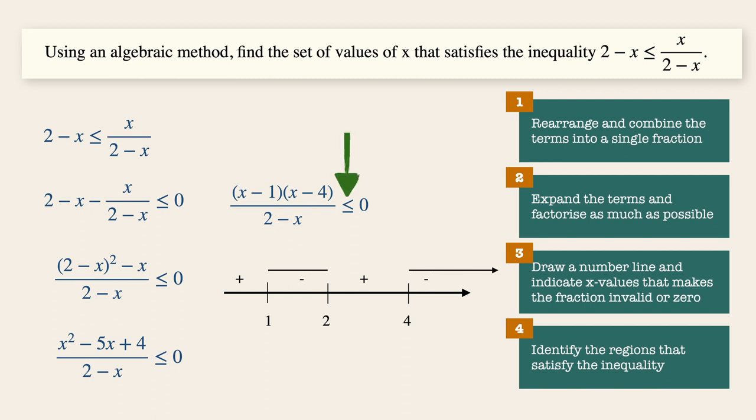Now since this is an inclusive symbol, we indicate an inclusive circle dot over here. And remember earlier on that x equals to two makes the fraction invalid, we will then indicate a circle over here to represent that the answer excludes two.